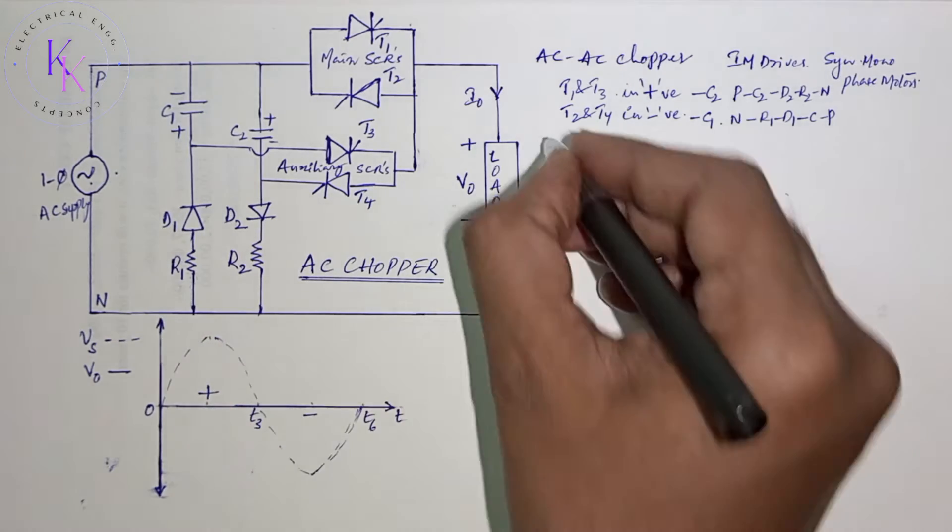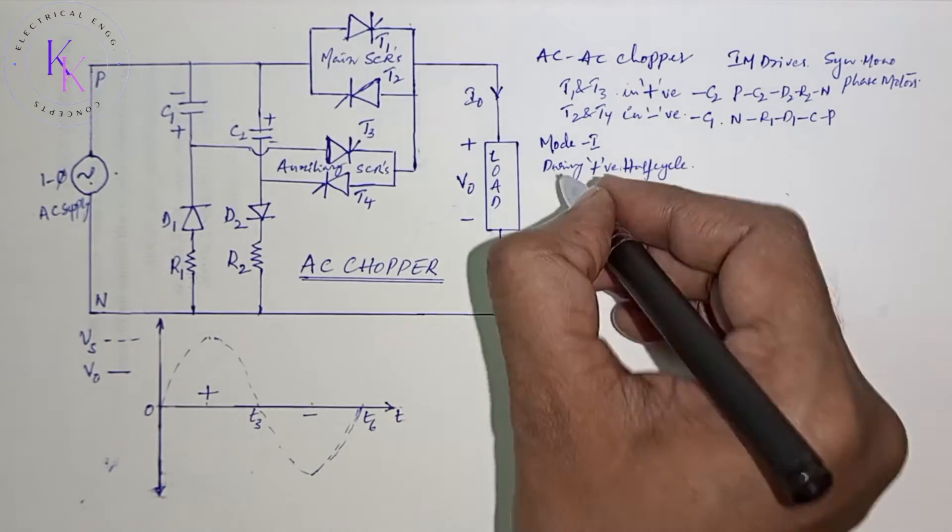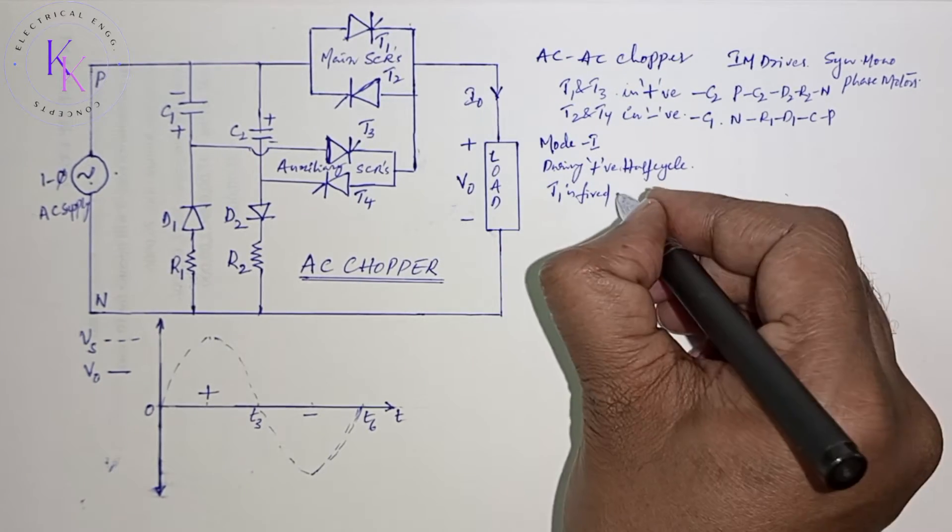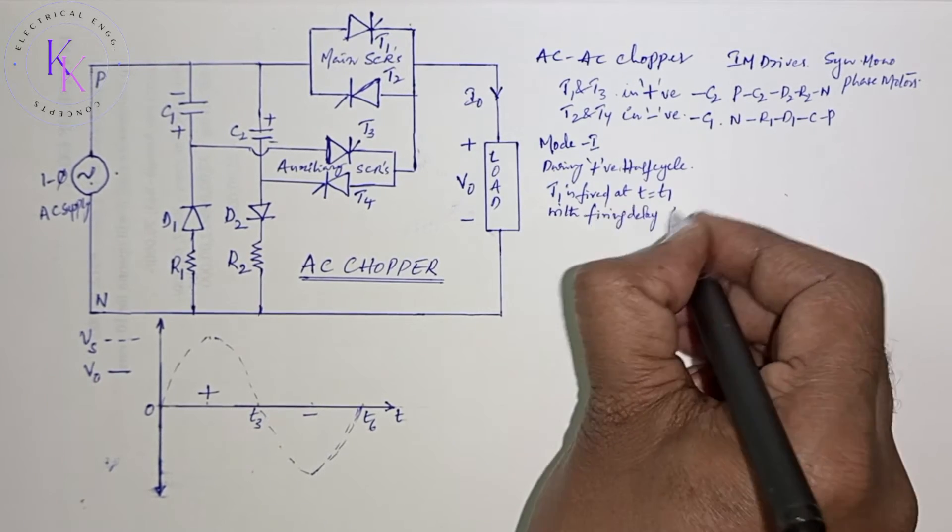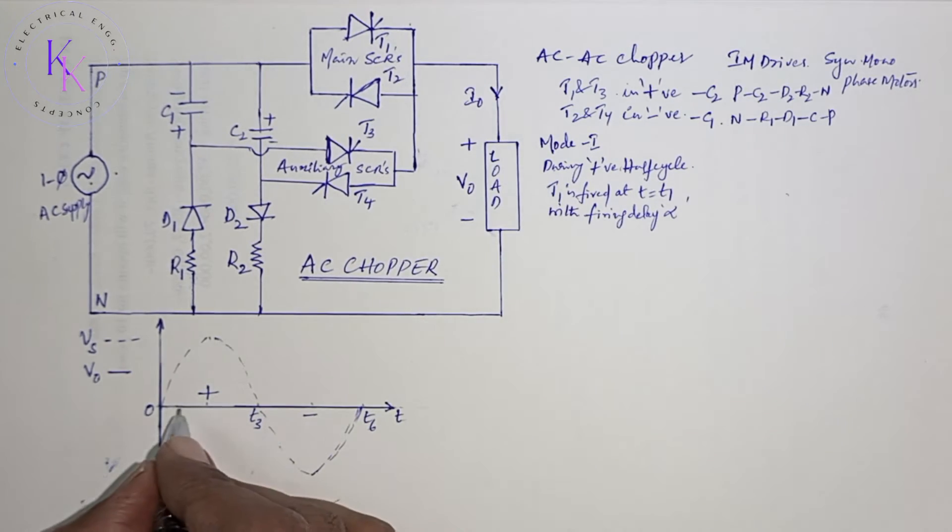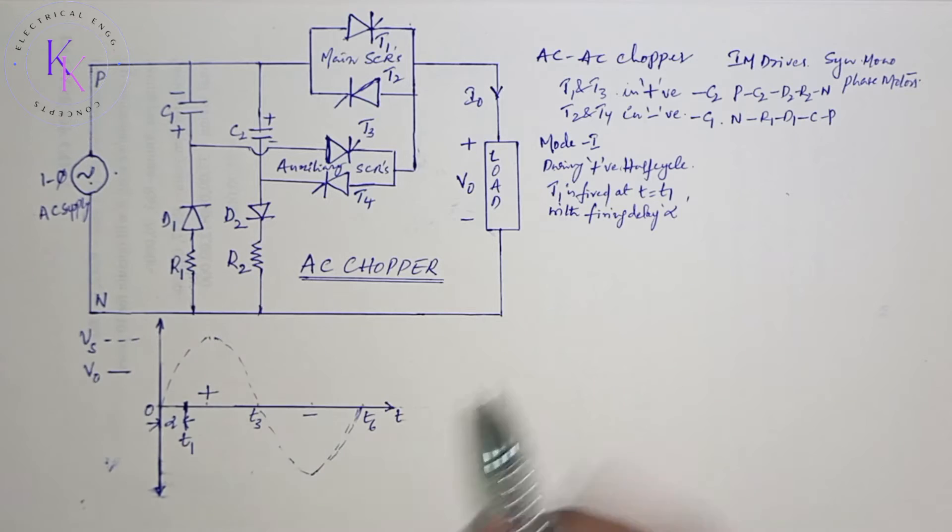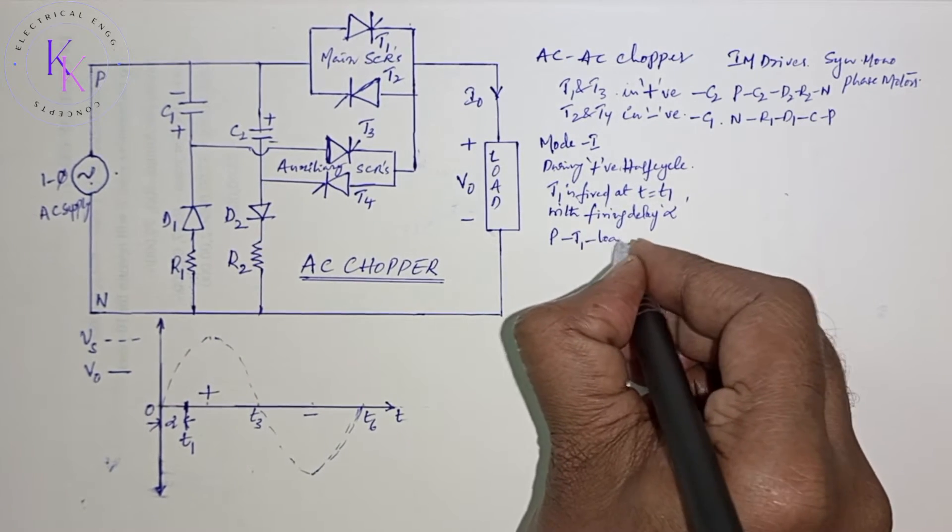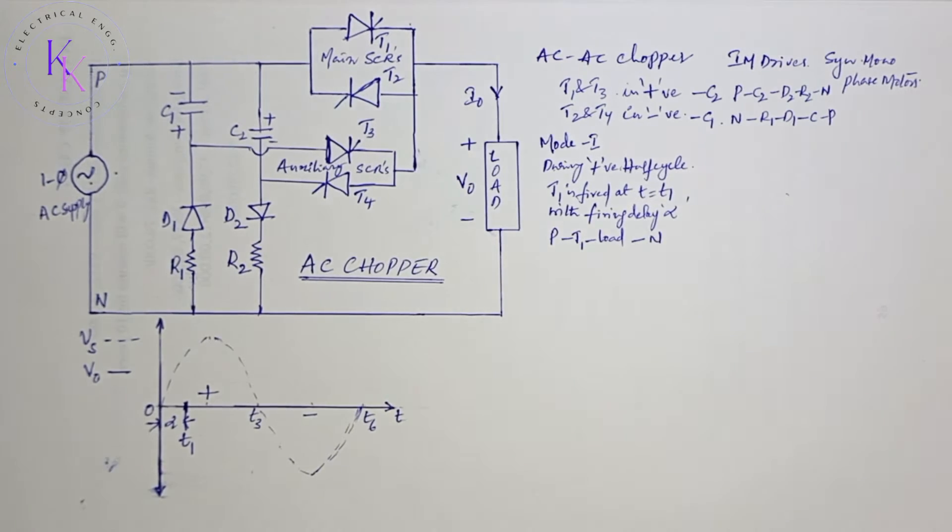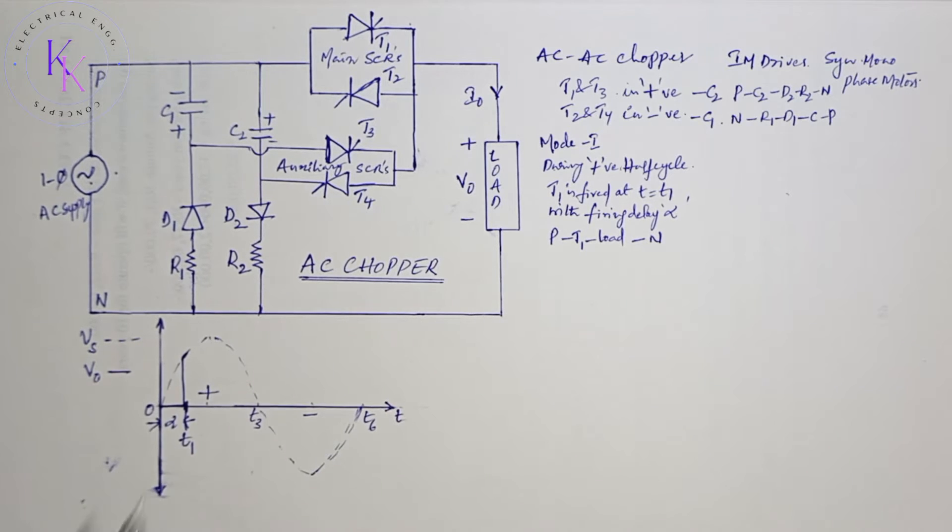Now mode 1: during positive half cycle, T1 is fired at T equals to T1 with a firing delay alpha. I am considering this as alpha and also T1. The supply flows from the phase to T1 to the load back to neutral. The source voltage appears at the load when T1 is fired.